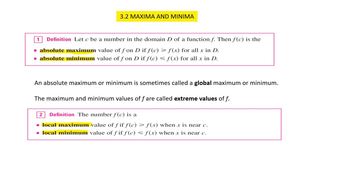The absolute maximum value of a function f on the domain d is defined when f(c) is greater than or equal to f(x) for all values of x in the domain. The absolute minimum value of a function f on the domain d is when f(z) is less than or equal to f(x) for all values of x in the domain d.